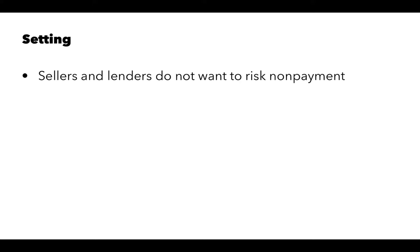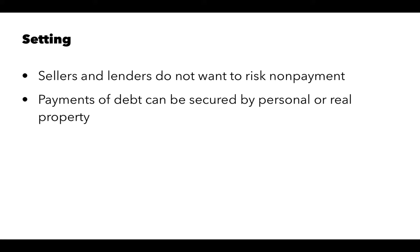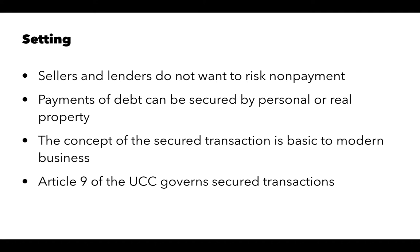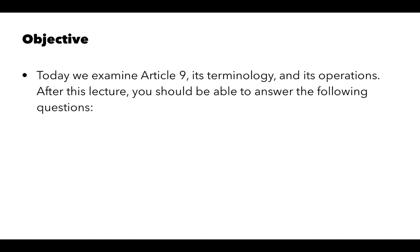In this lecture, we take up the creation and perfection of secured transactions. We know that sellers and lenders do not want to risk non-payment, and we've seen various tools that both sellers and lenders have to lessen the risk of non-payment. Payments of debt can be secured by personal or real property, which acts as a guarantee of repayment. And if repayment does not occur, then the property will go to the lender. The concept of the secured transaction is basic to modern business, and Article 9 of the UCC governs secured transactions. Today we're going to look at Article 9, its terminology, and its operations.